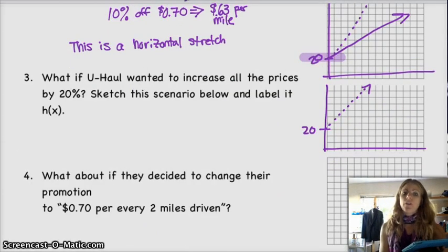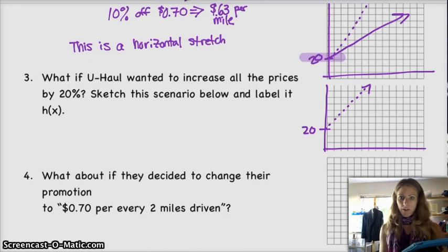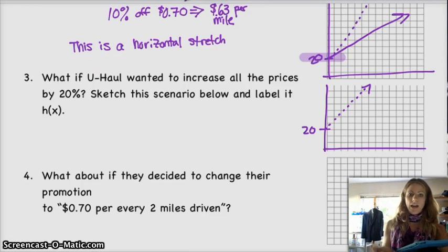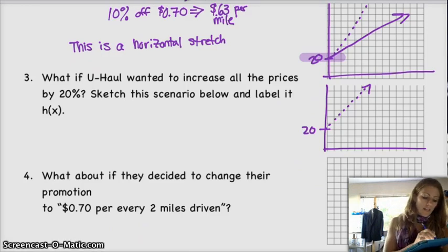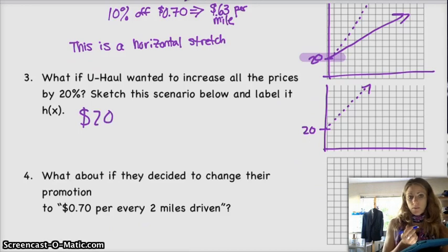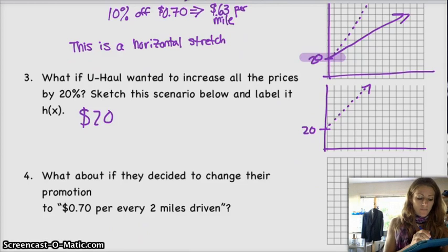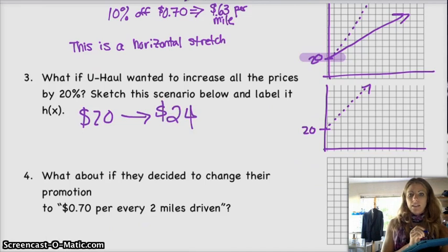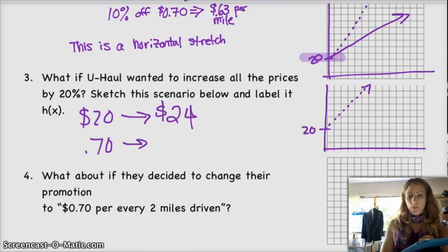Alright, now this is the other scenario. What if U-Haul wants to increase all of their prices by 20%? So that's including the $20 initiation fee, or flat rate, or whatever you want to call it. And so what that would mean is that the $20 increases by 20%. 20% of $20 is $4. So your initial rate becomes $24. And your price, that used to be $0.70, we need to multiply by 0.2, yeah, 0.2, 20% increase.